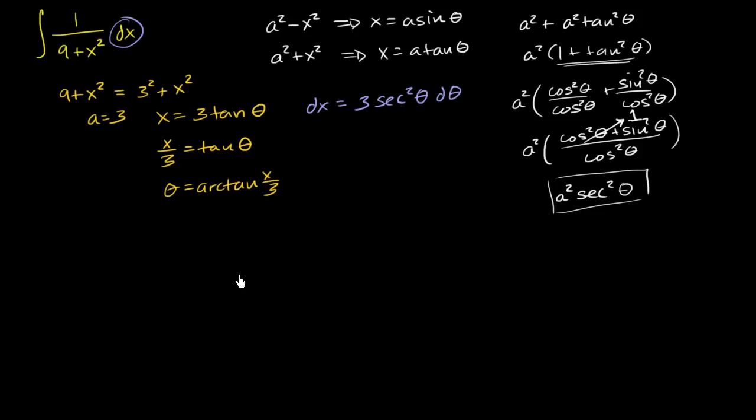Now we're armed with all the things necessary to rewrite this entire integral. It's going to be equal to the indefinite integral, where dx is 3 secant squared theta d theta, all over our a squared plus x squared.